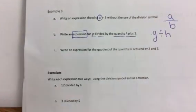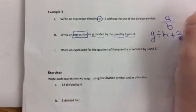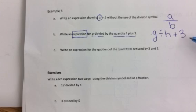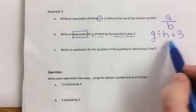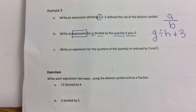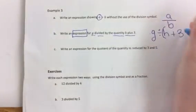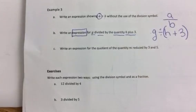by the quantity h plus is what operation? Plus 3. Can I stop there? What are we dividing g by? We're dividing g by h plus 3. So what do you think I need to do to h and 3? I have to put parentheses around there.